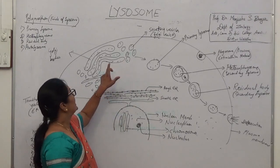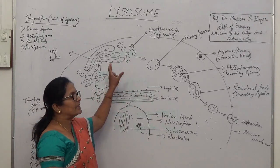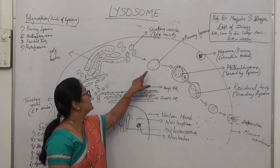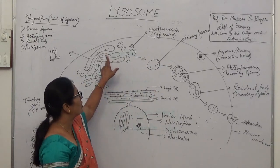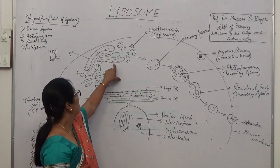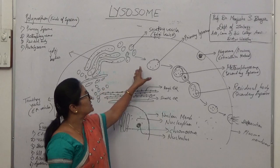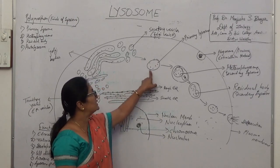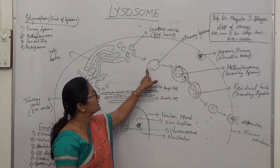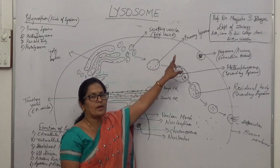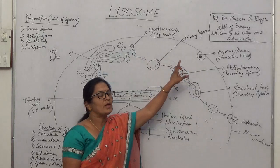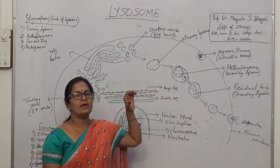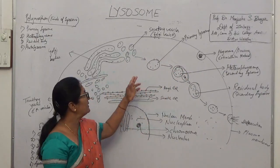So, the Lysosome is nothing but a spherical structure which arises from the Golgi complex. This spherical structure, the first structure which arises from the Golgi complex, is called as primary Lysosome. It contains strong enzyme, hydrolytic enzyme.